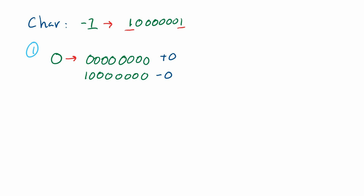The first problem is that these two values are not the same. If you asked the computer whether you have the value zero, you would have to ask the question twice because positive zero and negative zero are supposedly equivalent but aren't treated that way. The second problem, which is even worse, involves doing math: from negative one, adding one goes to negative zero, then adding one goes to zero, then adding one goes to positive one. That extra step is incorrect, so we have to find a way to not represent zero twice.